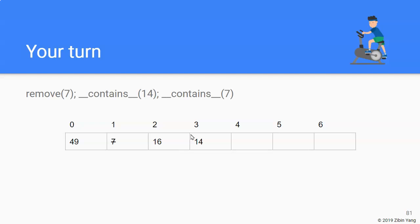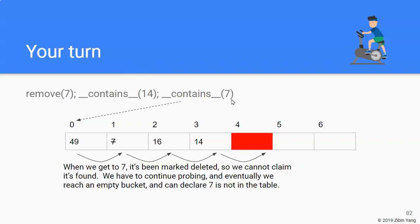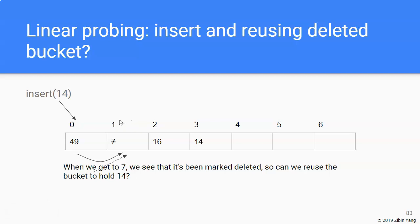Now let's consider: what if we want to find if the number 7 is in the hash table after it was removed? 7 hashes to bucket 0 — that has 49, not equal, so we go to the next bucket. It contains 7, which equals what we're looking for — however, that bucket is marked deleted, so 7 is not in the hash table. We keep probing until we reach an empty bucket, confirming 7 is not in the table.